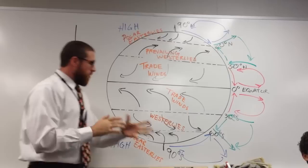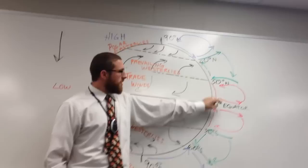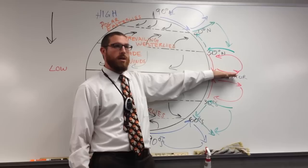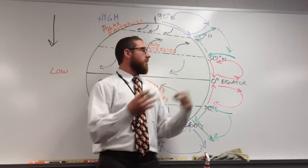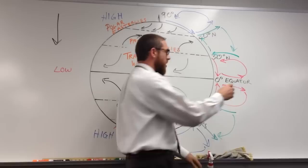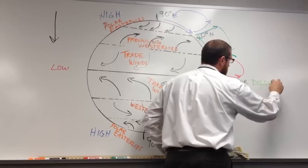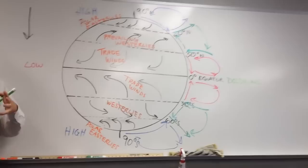Something interesting happens at the equator. The air convects on both sides but leaves a space in the middle where nothing's happening — the wind doesn't cross the equator very often. It's like a blank spot with no wind. Sailors used to get stuck there in their ships and couldn't go anywhere. They called this the doldrums — which is not a wind belt, just a nickname for the area of the globe with no wind.